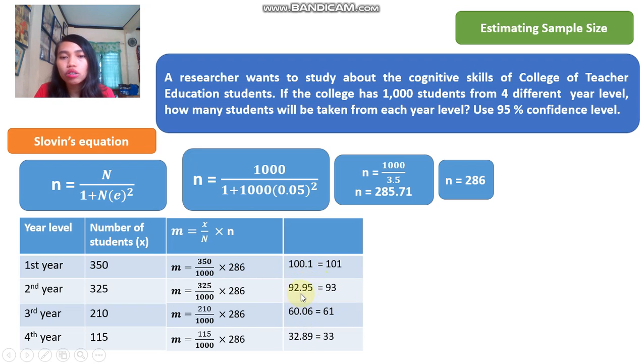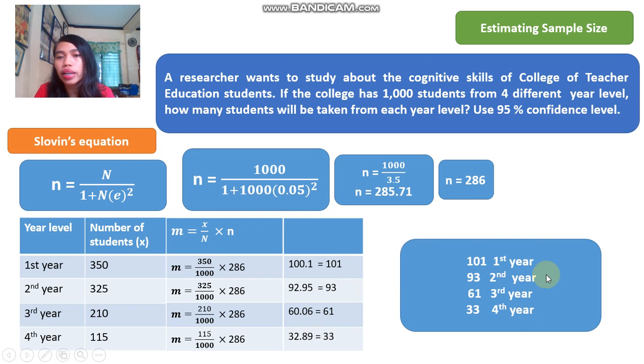101.1, 92.95, 60.06, 32.89. Round it up. So this is our final answer.